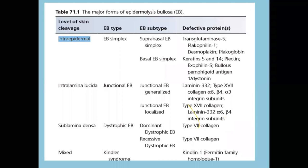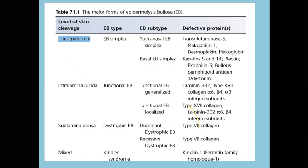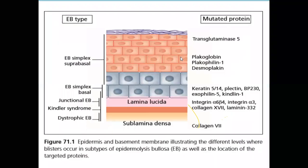The first is EB simplex, where the cleavage is intraepidermal. There are two main subtypes: suprabasal EB and basal EB simplex. The split at lamina lucida results in junctional EB, which can be generalized or localized. If the cleavage is at sub-lamina densa, the EB is called dystrophic EB, which is divided into dominant dystrophic and recessive dystrophic. The last type is Kindler syndrome, which is a mixed type of cleavage.